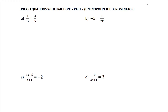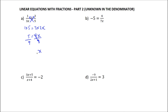To solve these questions, we apply the same approach of cross-multiplying. So 1 multiplied by 5 will be equal to 3 multiplied by 3x. So you end up with 5 equal to 9x. The opposite of multiplying by 9 is dividing by 9, so x will be equal to 5 over 9.